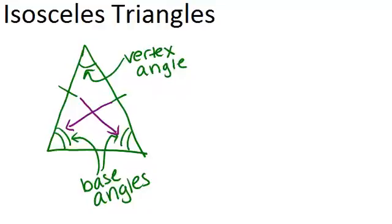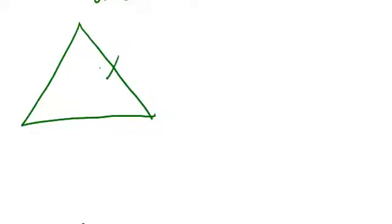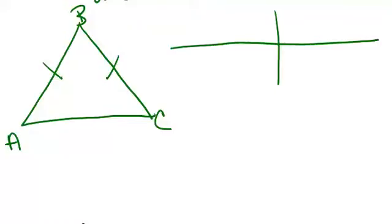Now let's think about why this is and see if we can actually prove that those base angles have to be congruent. So let's draw a new triangle. And we know that this is an isosceles triangle. So let's call this triangle ABC and set up our proof.